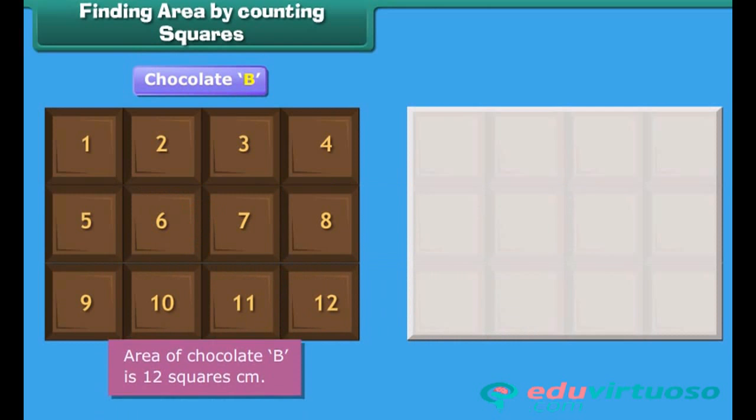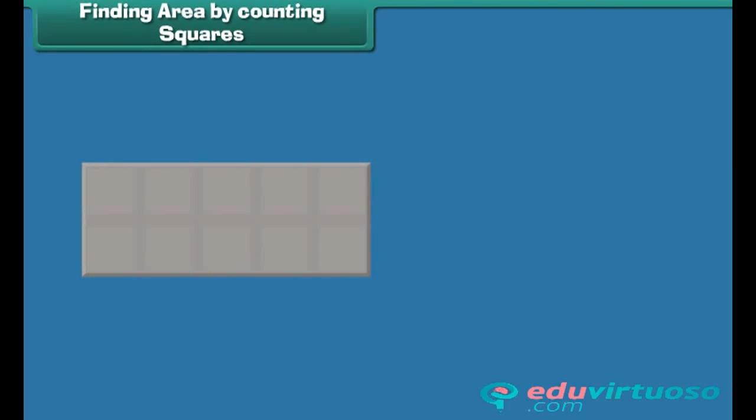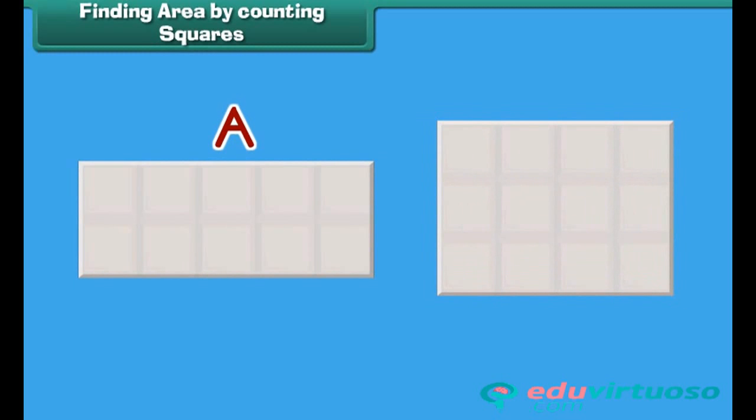Can you tell what would be its area? Very easy. It's 12 cm². So, among chocolates A and B, chocolate B is bigger in size.